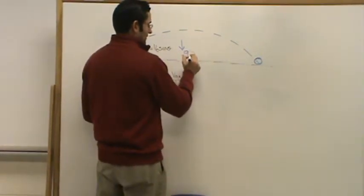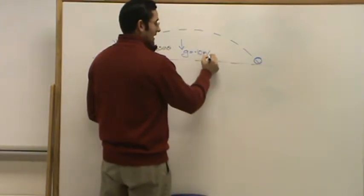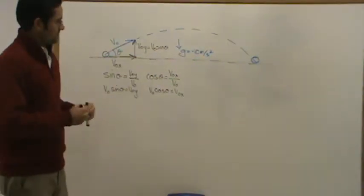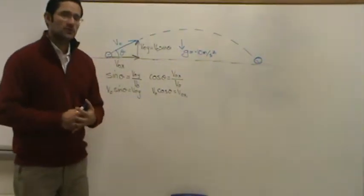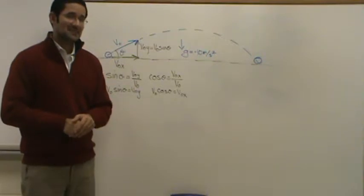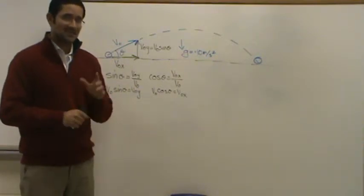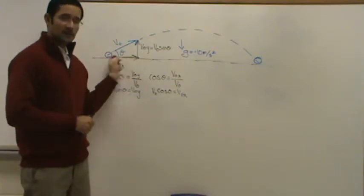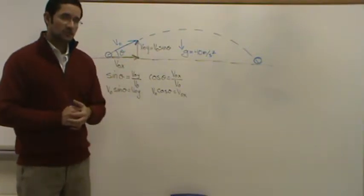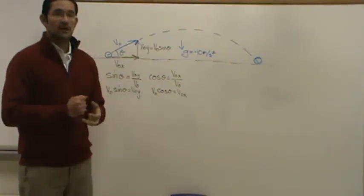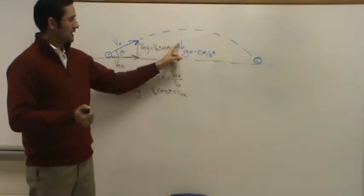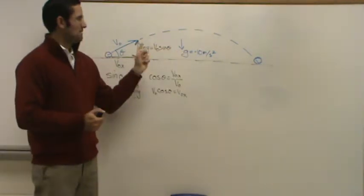We're going to say we're traveling through a vacuum, so there's no friction and no air resistance to impact the horizontal velocity. That means the horizontal velocity stays constant — it doesn't change, it doesn't diminish. However, as the ball goes up, the vertical velocity is going to change, because gravity is present at all times and is going to impact the vertical velocity.